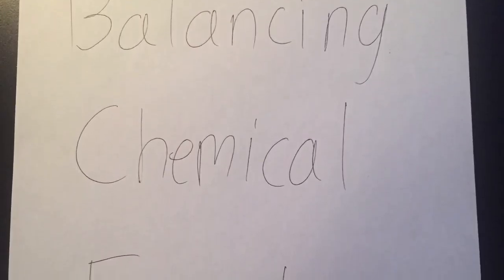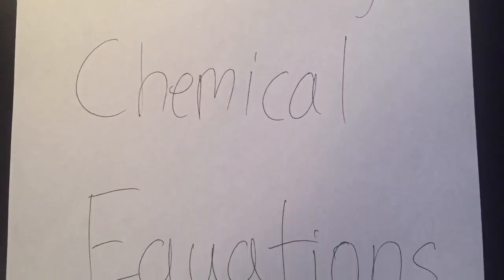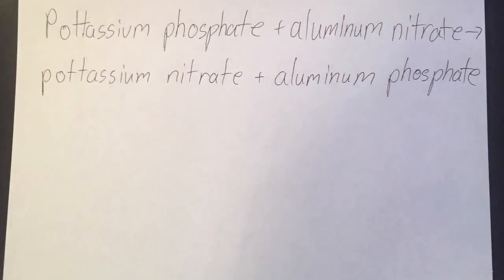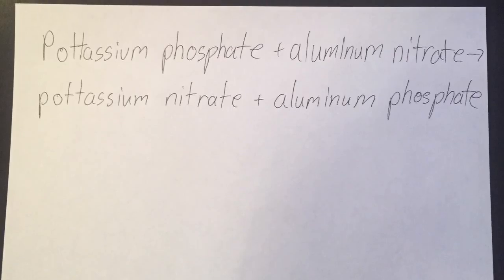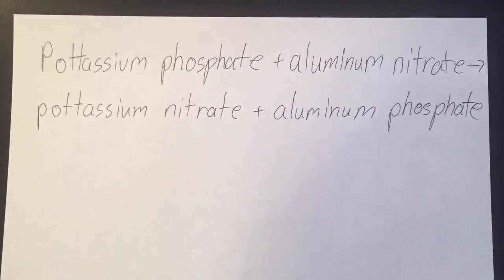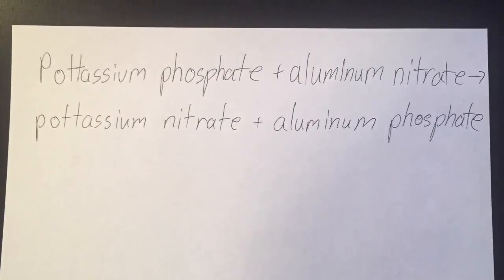Today we will be balancing chemical equations. The chemical equation is potassium phosphate plus aluminum nitrate yields potassium nitrate plus aluminum phosphate.